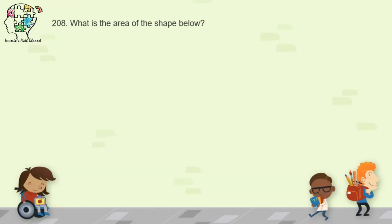Question 208: what is the area of the shape shown? It is a rectangle, so the area is length times width — 3 times 1 equals 3 square centimeters. We write square centimeters because we are calculating area.